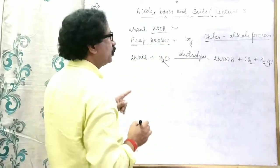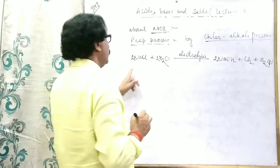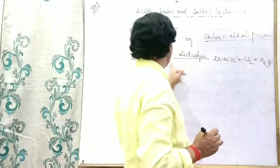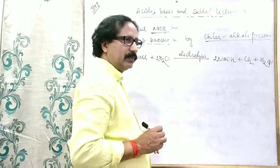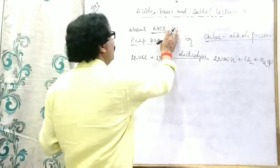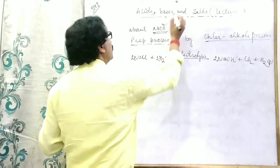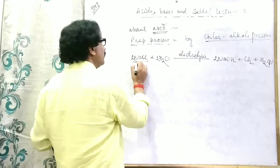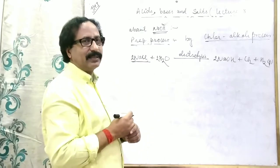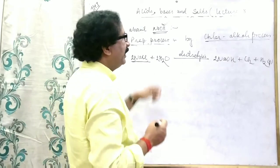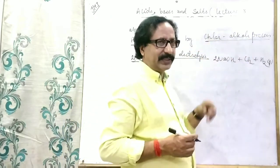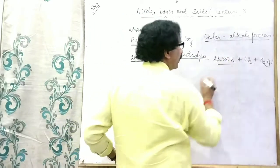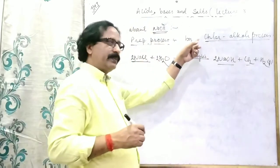There are 2 oxygens so we write 2 here, 2 NaOH, 2 Cl₂, H₂ — that is balanced. This is the preparation process of caustic soda. It is prepared basically from common salt, means NaCl, from sodium chloride, and the name of this process is known as the chloralkali process, because in this process alkali means NaOH and chlor means chlorine are both formed.